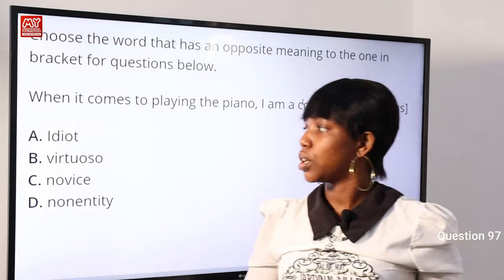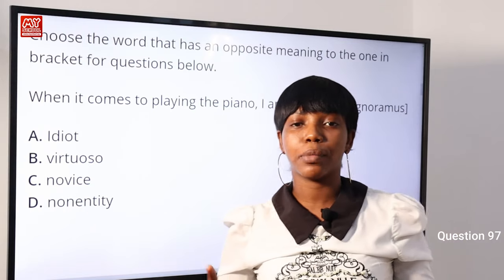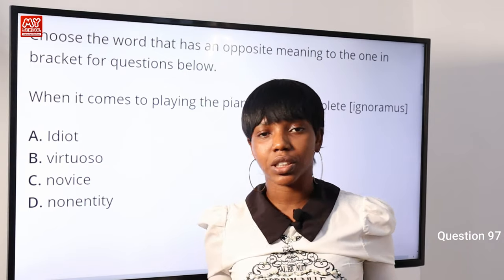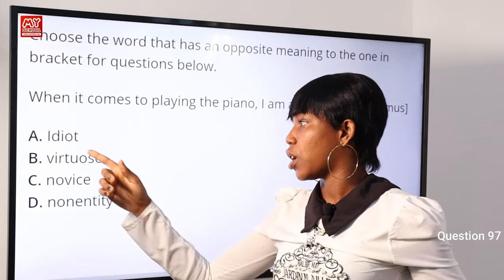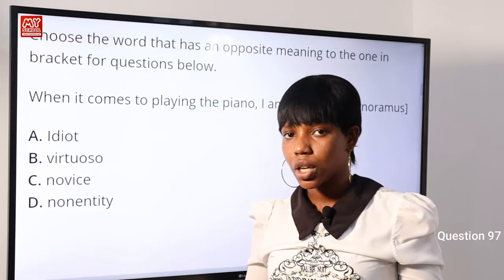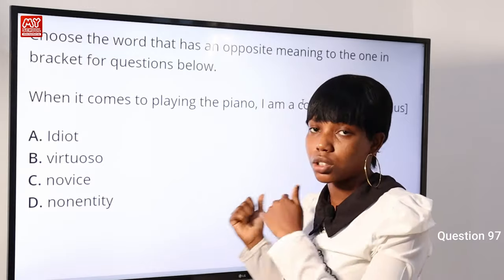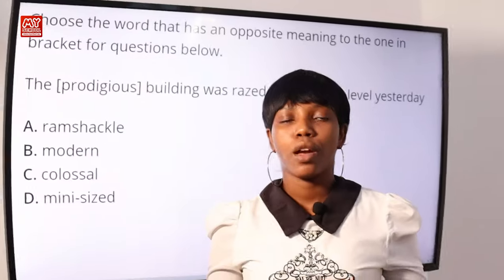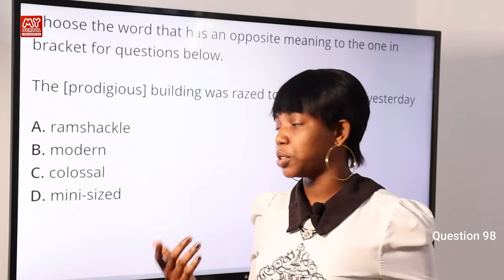Question 97: 'When it comes to playing the piano, I am a complete ignoramus.' Options: A) idiot, B) virtuoso, C) novice, D) nonentity. 'Ignoramus' means to not know about something — to be ignorant or a novice. We are looking for the opposite — a positive word. Option A) idiot is negative. Option B) virtuoso means to be an expert in a field — the opposite of ignoramus. Option C) novice is synonymous to ignoramus. Option D) nonentity is also negative. Option B) virtuoso is the correct answer.